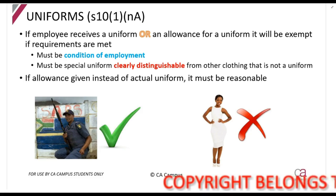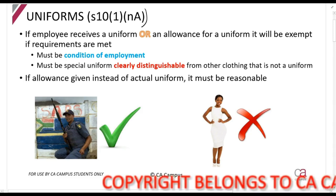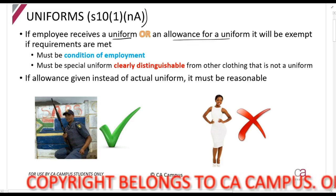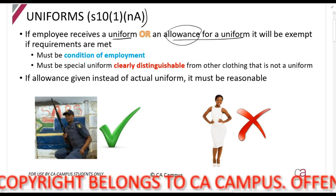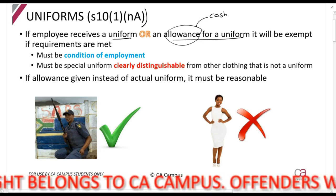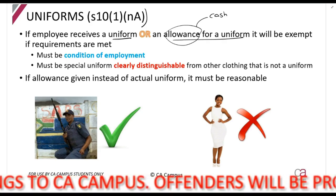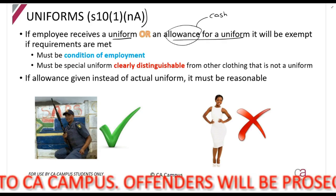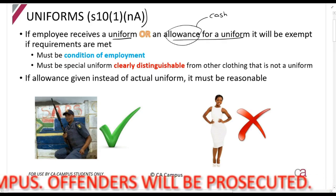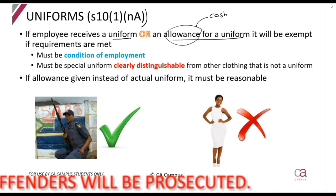The first one is Section 10.1(n)(A). This section tells you that if your employer gives you a uniform, or an allowance for a uniform — and allowance always means cash — that amount falls under gross income. The gross income definition says you can receive a total amount in cash or otherwise. So if your employer gives you a uniform, that's 'otherwise'; if they give you cash for a uniform, it's obviously cash. That amount you receive from an employer, because of your employment, will be gross income.